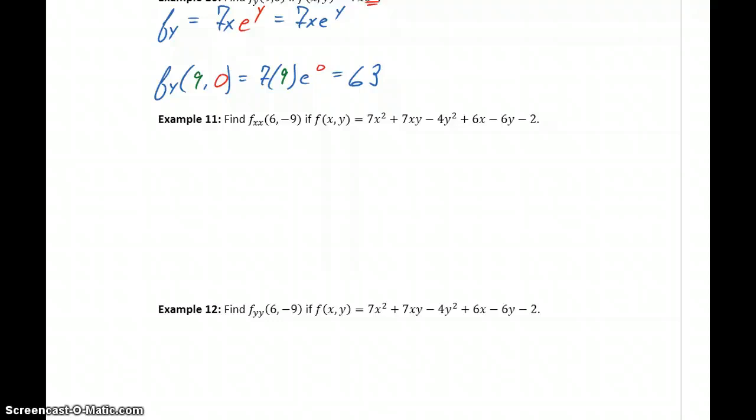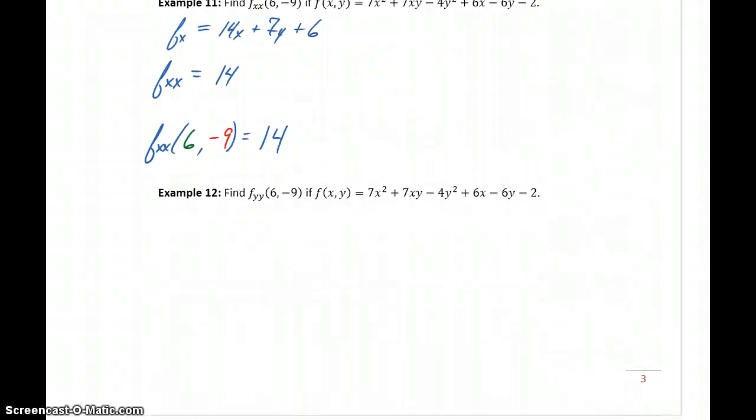In Example 11, now we want to look at the same idea but with second derivatives. If we want f_xx, the first thing we need is f_x, the first derivative with respect to x, which will be 14x plus 7y minus 4y² becomes 0, plus 6, minus 6y becomes 0, and minus 2 becomes 0. Then we'll take the second derivative with respect to x, which gives us 14. To evaluate f_xx at x equals 6, y equals -9, we look at evaluating this function. Again, there are no variables to substitute into, so actually regardless of what x and y coordinates we have, the value of our second derivative will always be exactly 14.